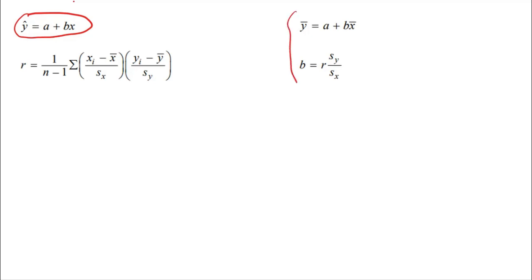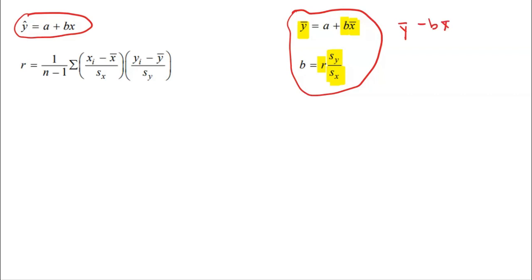These other formulas are to help you find the values A and B by hand. You can also find A and B through a computer regression analysis chart, or using your calculator, or by hand if you have all the data. First, you find the slope by taking the R value, multiplying it by the standard deviation of Y, and dividing by the standard deviation of X. Then to find the A value, you use the formula: A equals the average Y minus B times the average X.